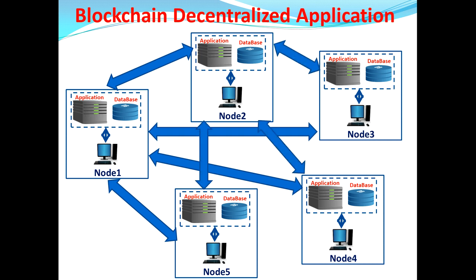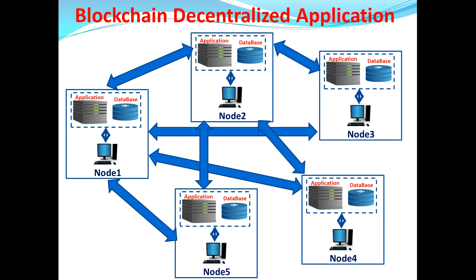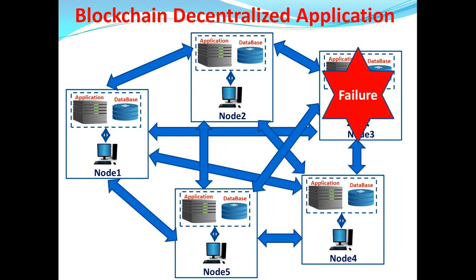In blockchain technology, each and every node is connected to every other node. For example, node 1 is connected with nodes 2, 3, 4, and 5; node 2 is connected with nodes 3, 4, 5, and 1; and so on. Every machine is connected with every other machine. This is how blockchain technology overcomes the single point of failure — if node 3 goes down, nodes 1, 2, 4, and 5 are still running and all incoming requests get routed between them.